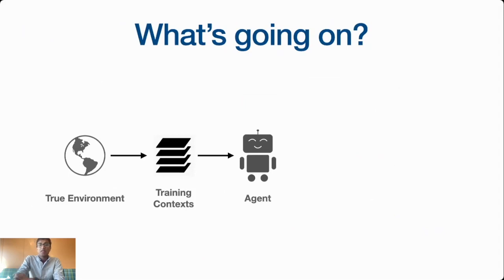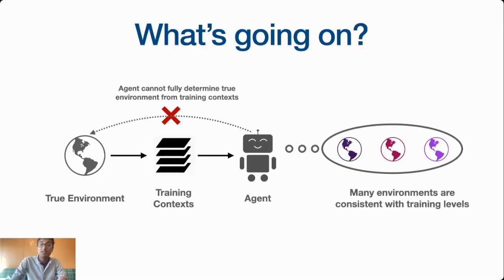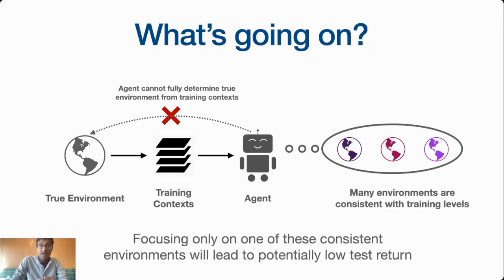What's going on? When we receive the training context from the agent, the agent wants to train in some kind of environment. But the issue is that given this limited set of training contexts, the agent can't fully reconstruct what the true environment looked like, because there's actually many environments that are consistent with this limited training set of levels. If the agent focuses on only one of these possible consistent environments, this can lead to potentially low test return. Instead, a better strategy for an agent is to come up with a strategy that's going to work well across these different environments.